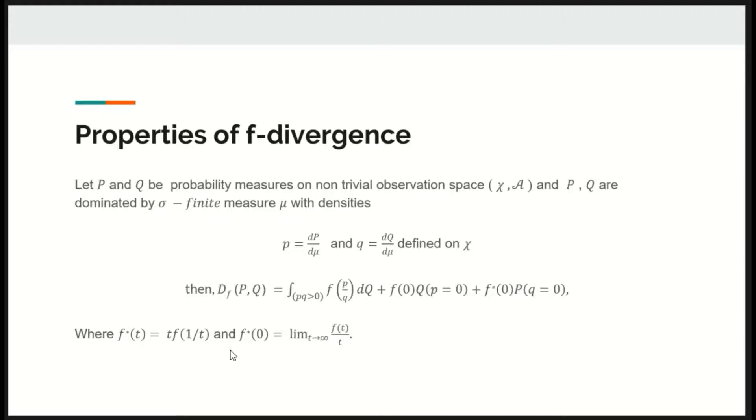The adjoint function F-star of t is defined as F-star of t equals t times f of 1 by t. And F-star of 0 is defined as limit t going to infinity F of t by t.